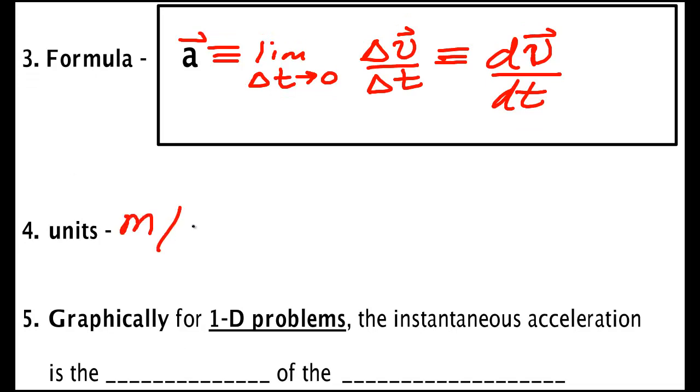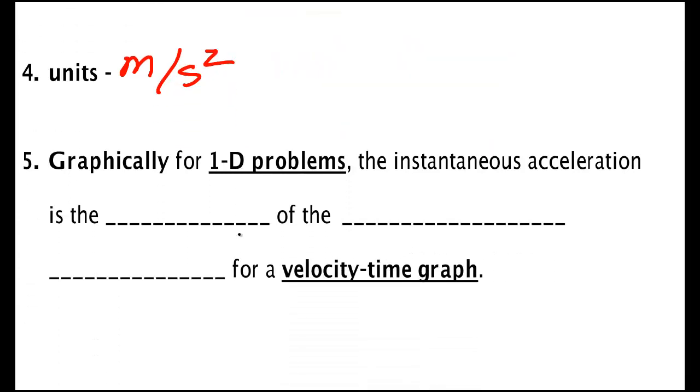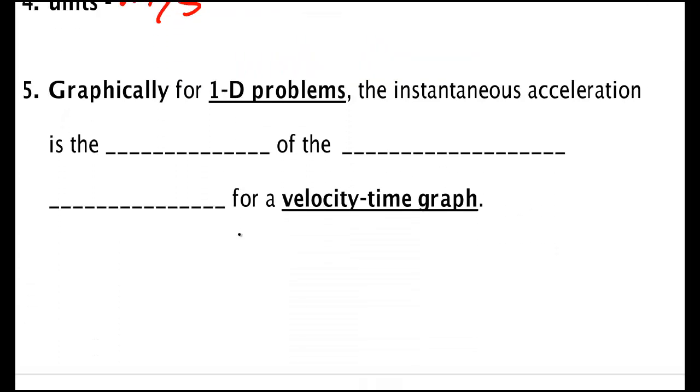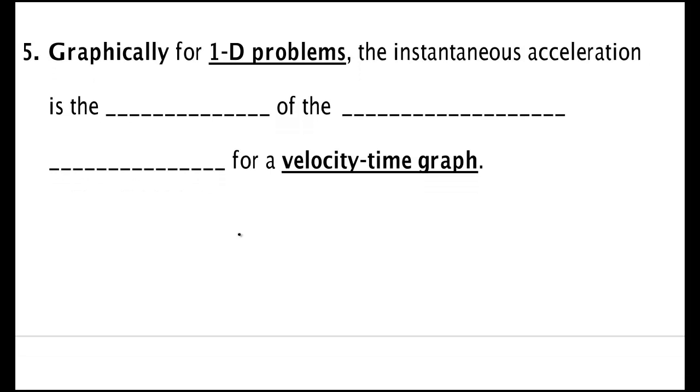Units, meters per second squared, and again like all derivatives, if you're on the velocity time graph, then what we're talking about is the slope of the tangent line. So in the same way the slope of the tangent line on a position time graph is velocity, the slope of the tangent line on a velocity time graph gives you acceleration.